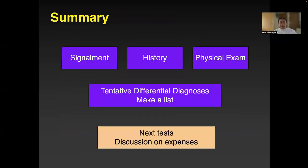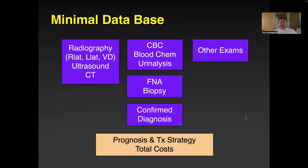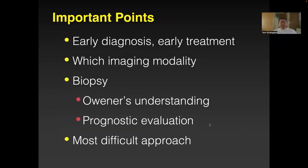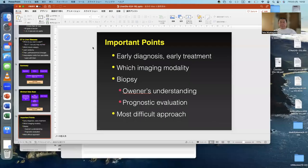Summary: signalment, history, physical exam, tentative differential diagnosis, make a list, do the right tests and do them well. For liver disease, always think about biopsy. Pathoanatomical changes require strong interpretation skills — that's difficult. It is difficult but you can do it. That's it.